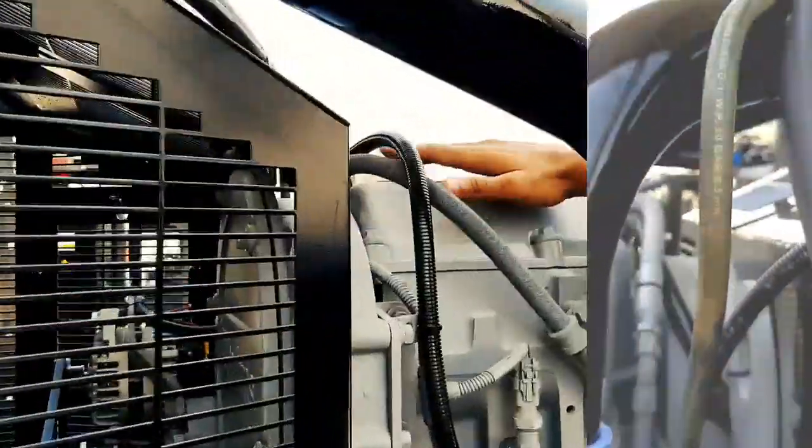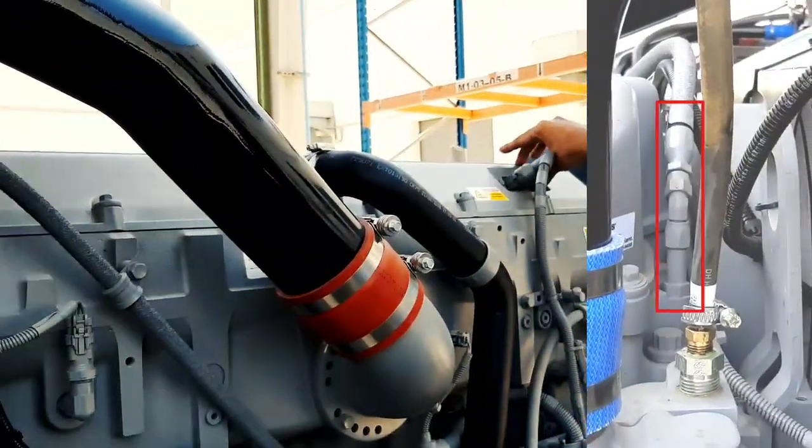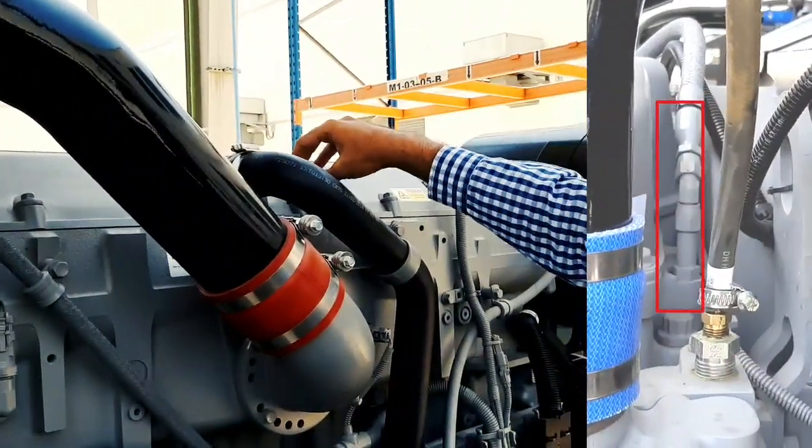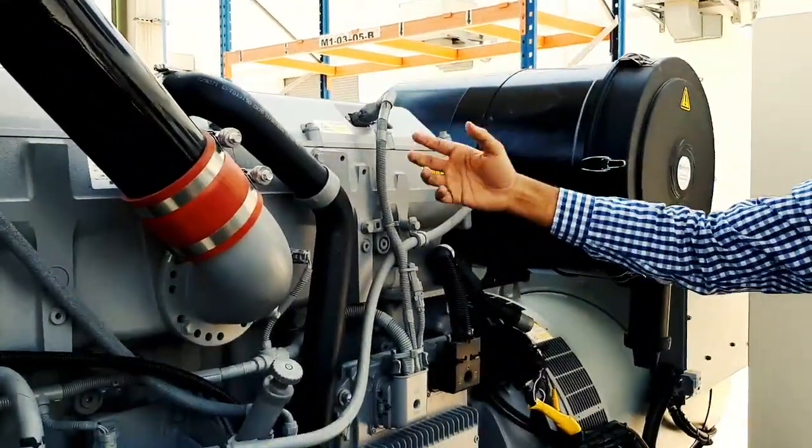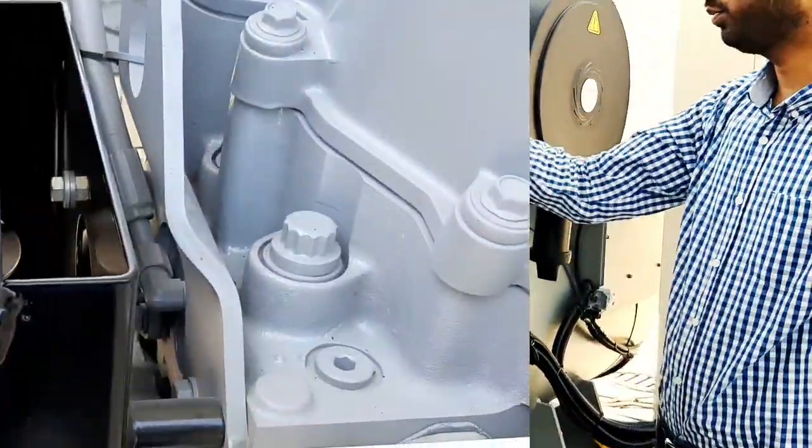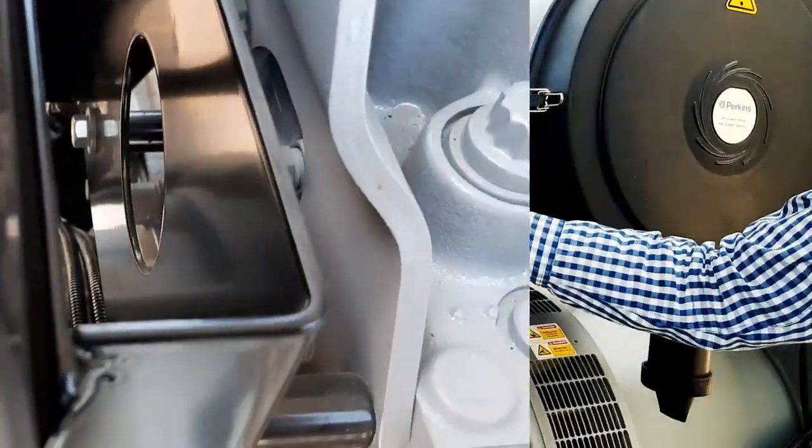Here we have a complete six injectors in this engine with common rail system. After the fuel is injected, the remaining fuel will come out from this pipe, which is connected here in the common rail.